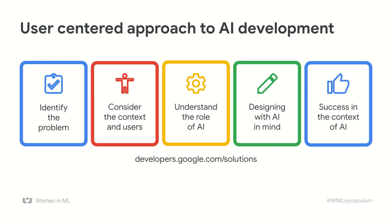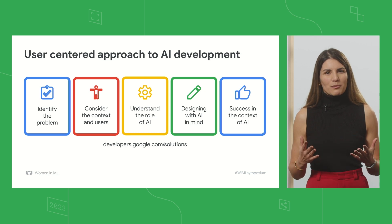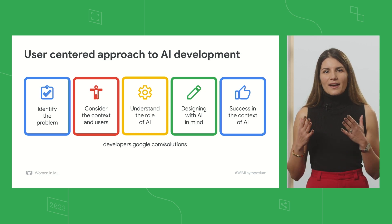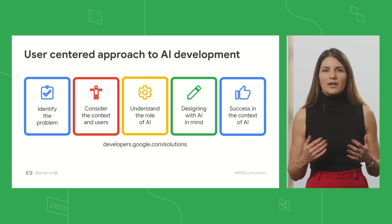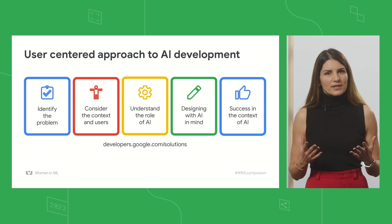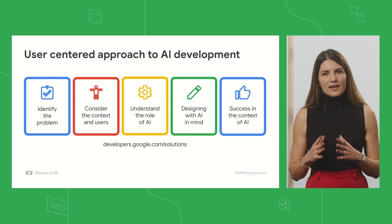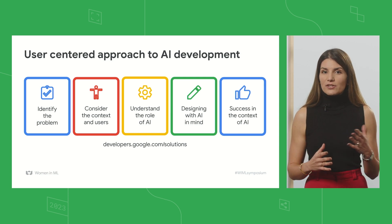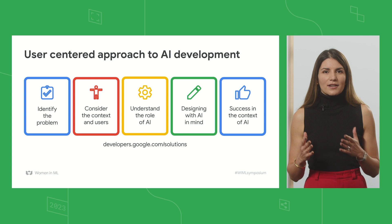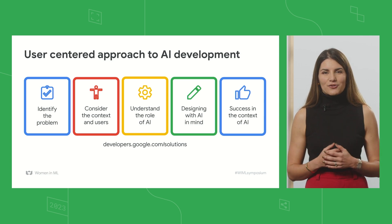This framework can help you understand how to get started. Start by identifying the problem that you're trying to solve. Secondly, consider your user needs and pain points. Understand the risks and evaluate if it's technically feasible to solve your problem using AI. Then consider how to design for an optimized experience, trust, and control. And finally, define what success looks like and how you'll measure it.